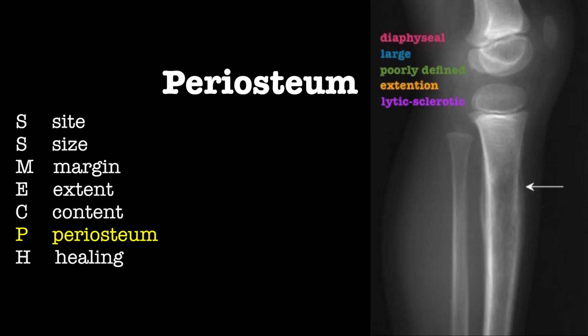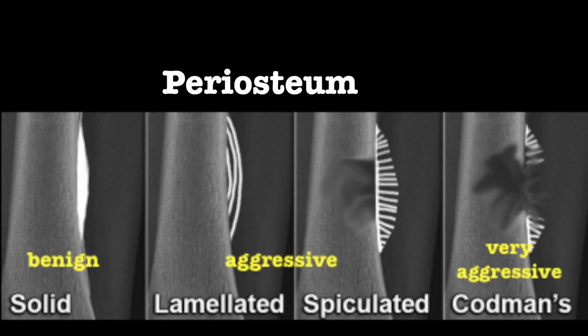The periosteum can appear to be solid, which suggests a slow-growing benign process; lamellated onion peeling, which is typical of Ewing's sarcoma; sunburst appearance, which suggests an aggressive process; and the presence of Codman's triangle suggests a very aggressive malignant process, as seen in osteosarcoma.